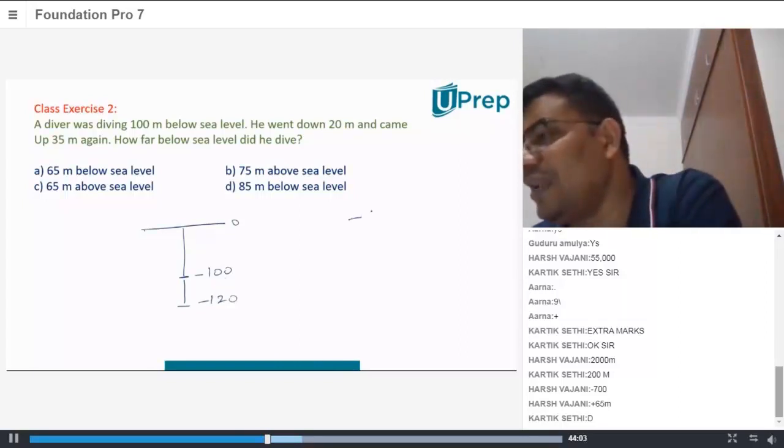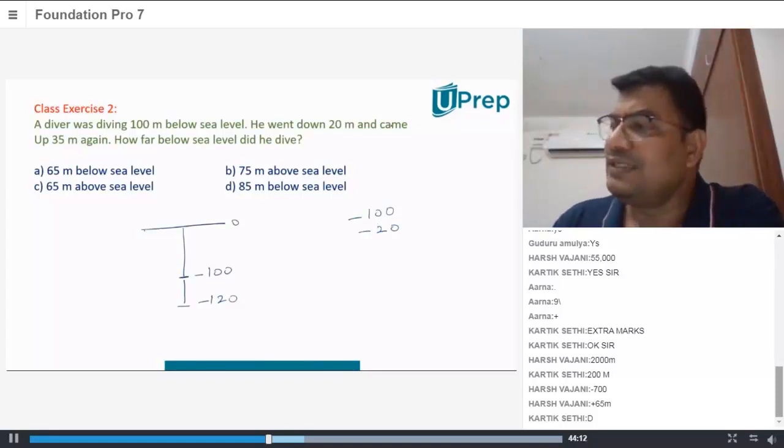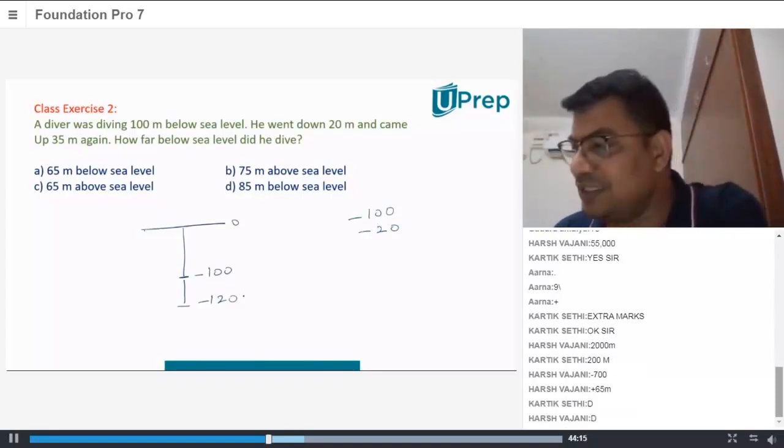Basically he was at minus 100 and what did he do? He has gone further 20 meters down, so minus 20. Now he's saying and came up 35 meters again, so that means he has gone up 35 meters again.